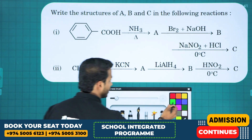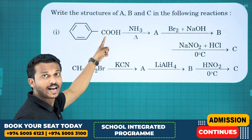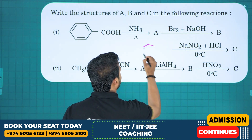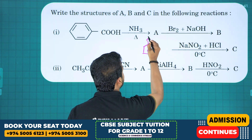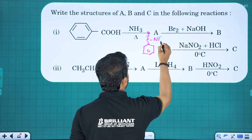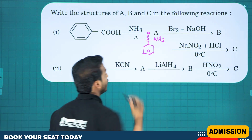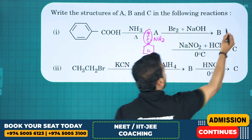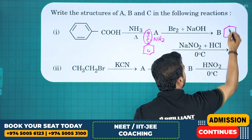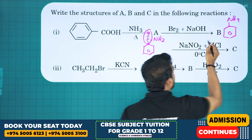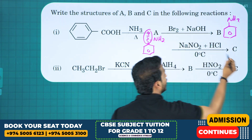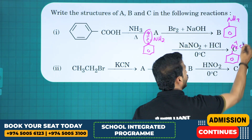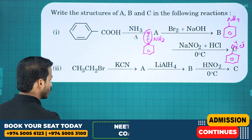Next question: write the structure of A, B, C. Again, A is benzoic acid. Acid heated with ammonia gives amide (benzamide). Benzamide on Hofmann bromamide degradation — the CO group is cut — gives aniline. Aniline on diazotization gives benzene diazonium salt as compound C.